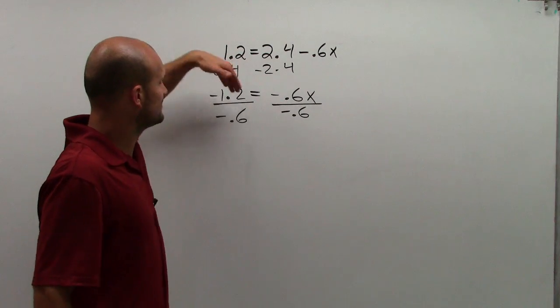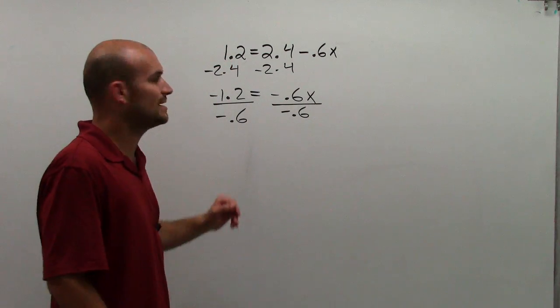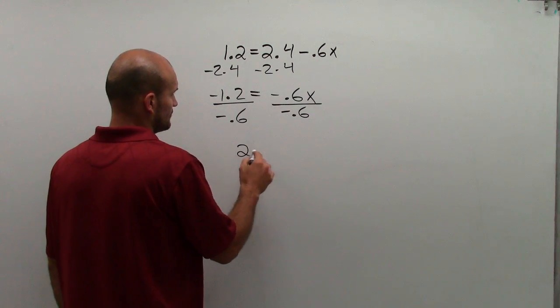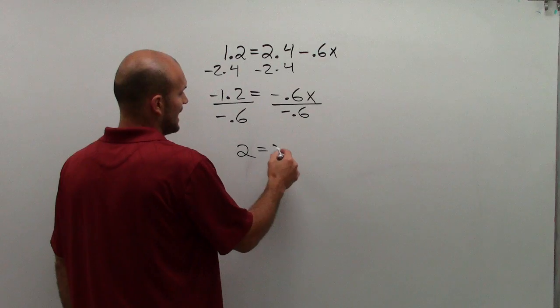All right, so now you divide on both sides. Negative 1.2 divided by negative 0.6 ends up equaling 2, which is equal to x.